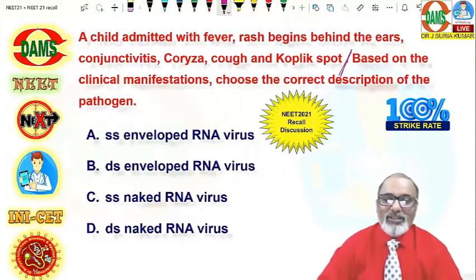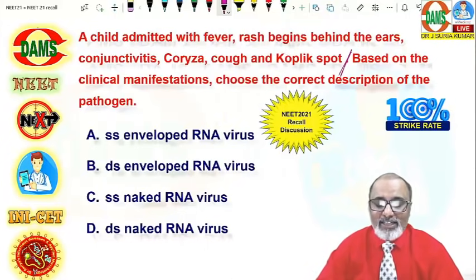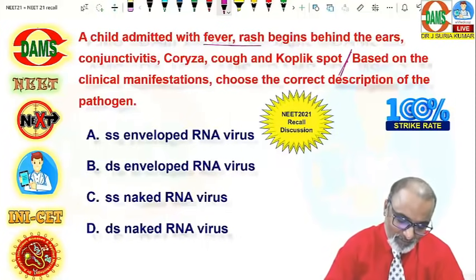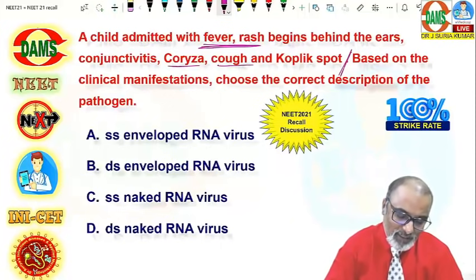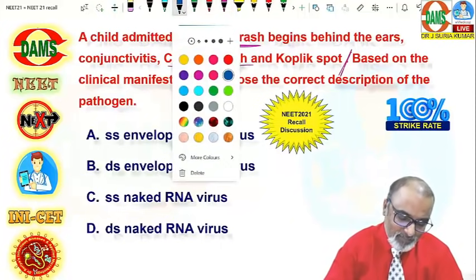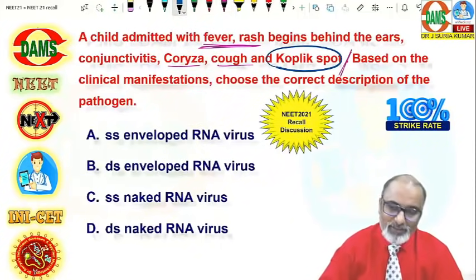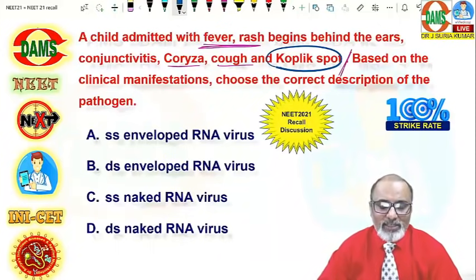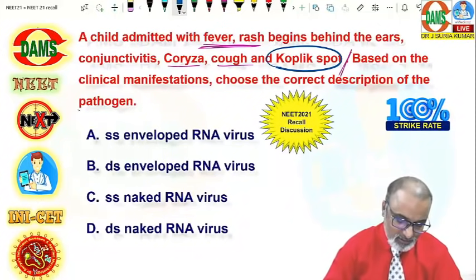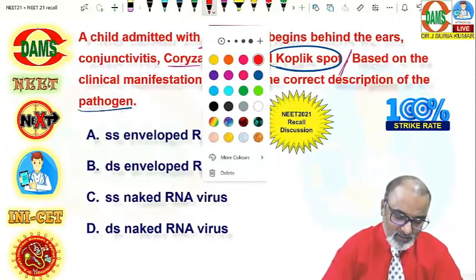Because the new case definition criteria for measles is fever with rash, and the old one conjunctivitis, coryza, cough and Koplik spot is pathognomonic. Koplik spot is pathognomonic for measles. So it's the case of measles. Good.